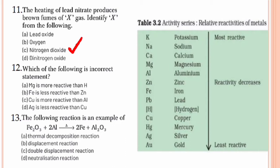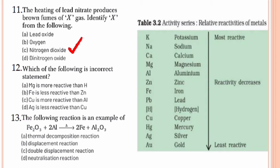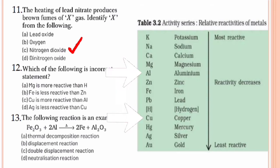From the reactivity series, magnesium is more reactive than hydrogen because magnesium lies above hydrogen. Iron is lying below zinc, which shows that iron is less reactive than zinc. If you check for copper and aluminium, copper lies much below aluminium. This makes clear that copper is less reactive than aluminium, and hence option C is wrong. The incorrect statement is option C.